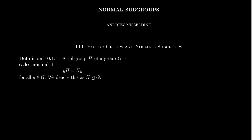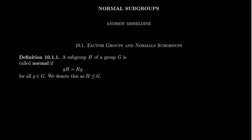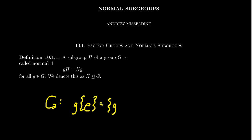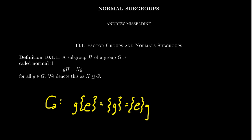Normal subgroups are things we've seen before. For any group whatsoever, you have two important normal subgroups. One is the trivial subgroup itself. If you just have the identity and multiply it by any element g, this set is just equal to the element g, which can be factored the other way around. When it comes to the trivial subgroup, the cosets are just singletons — it's just the element g. So in particular, the left coset is equal to the right coset, and we always get that the trivial subgroup is a normal subgroup of G.